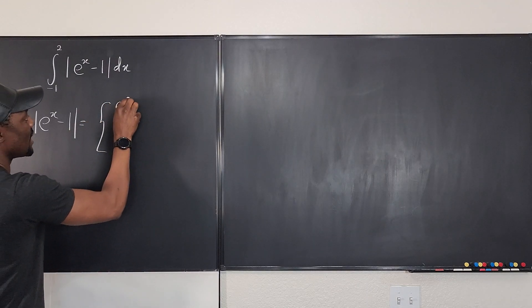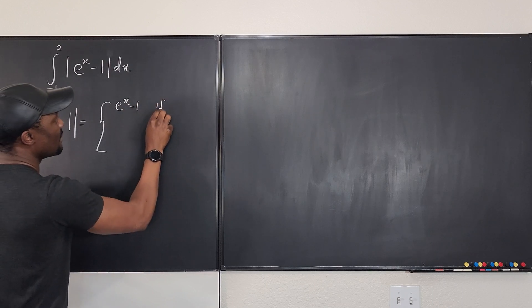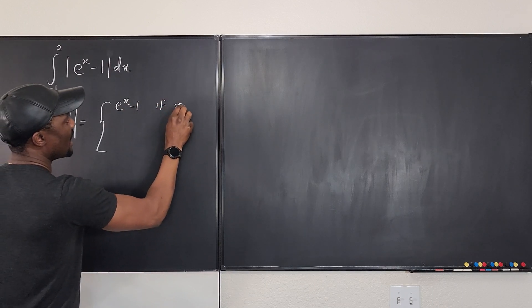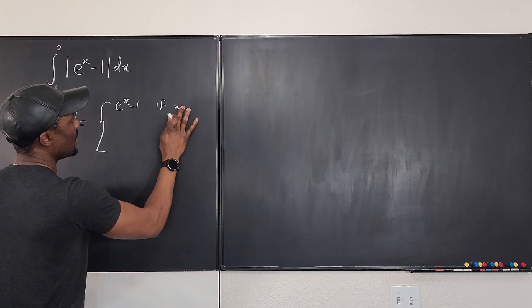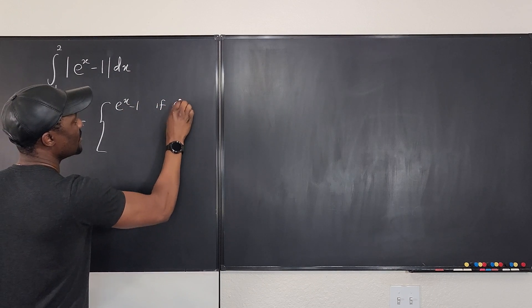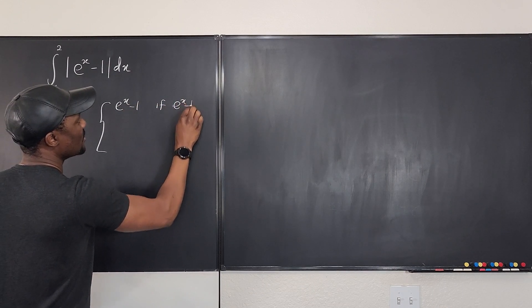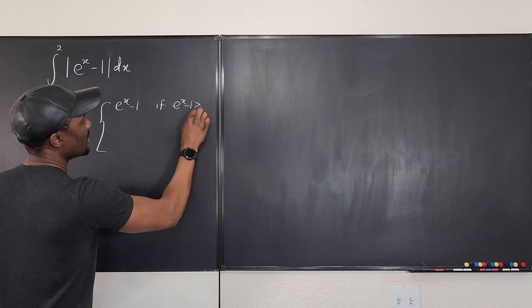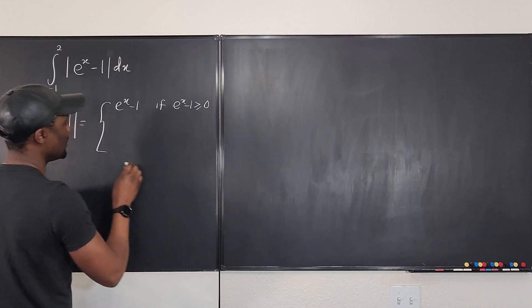The first thing you'll have to do is to write the definition of e to the x minus one. So we know that the absolute value of e to the x minus one is equal to — we create the conditions — it's e to the x minus one if e to the x minus one is greater than or equal to zero.